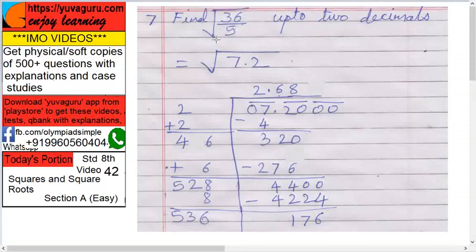36 upon 5: 5 into 9, 5 into 7.2. Now we have to find the square root up to two decimal places. Remember how to solve this: point here, 7.2 here, and we want two decimals.